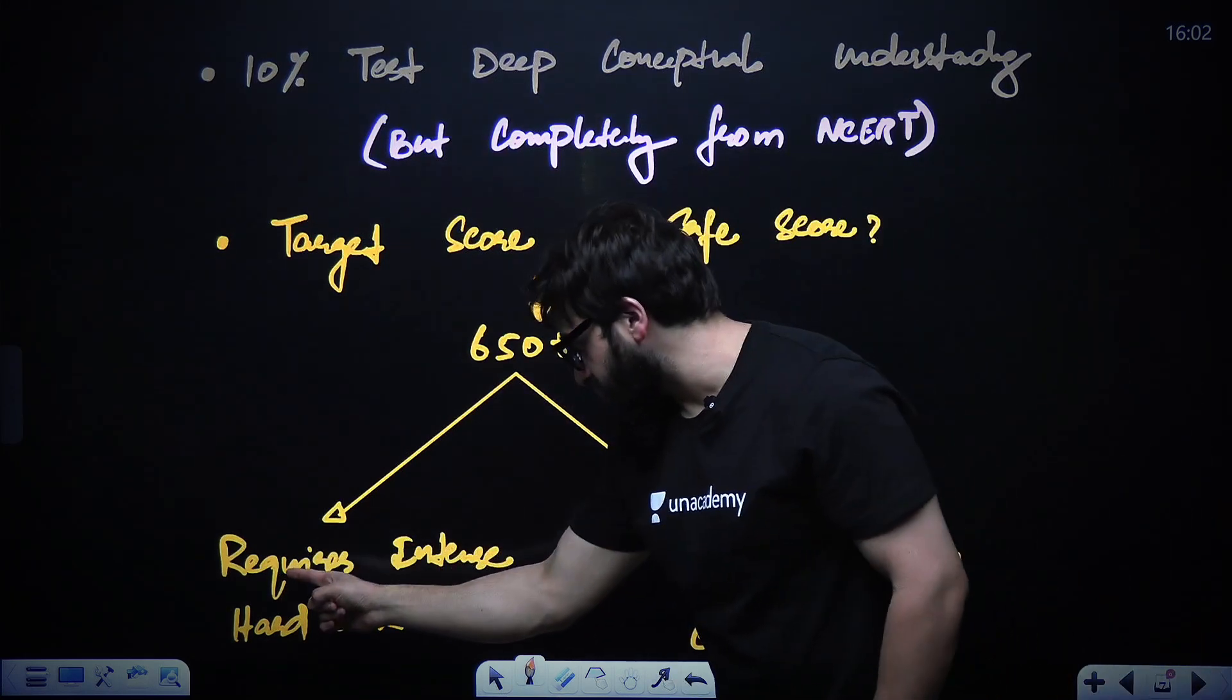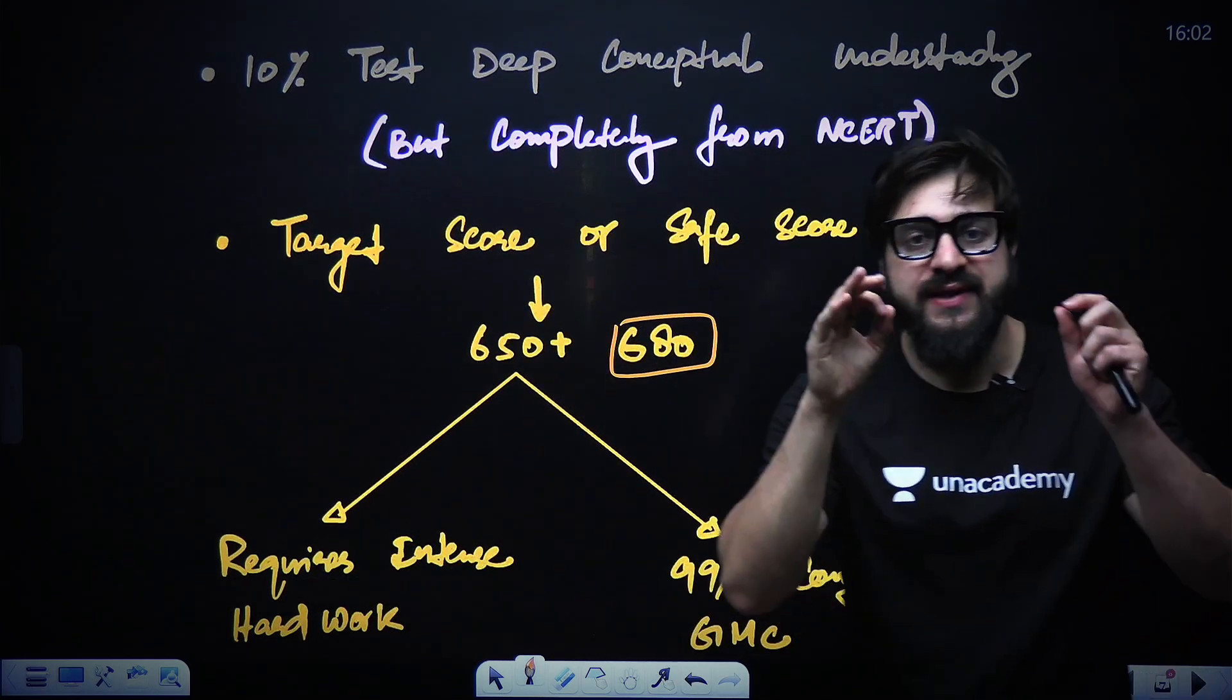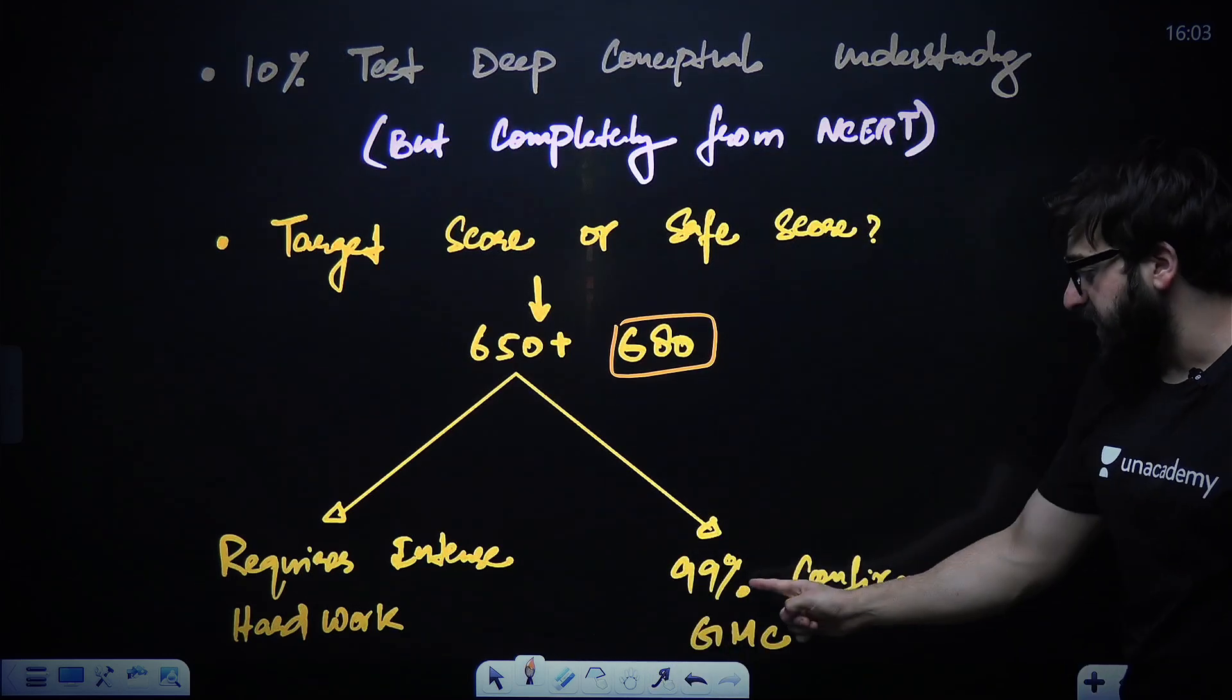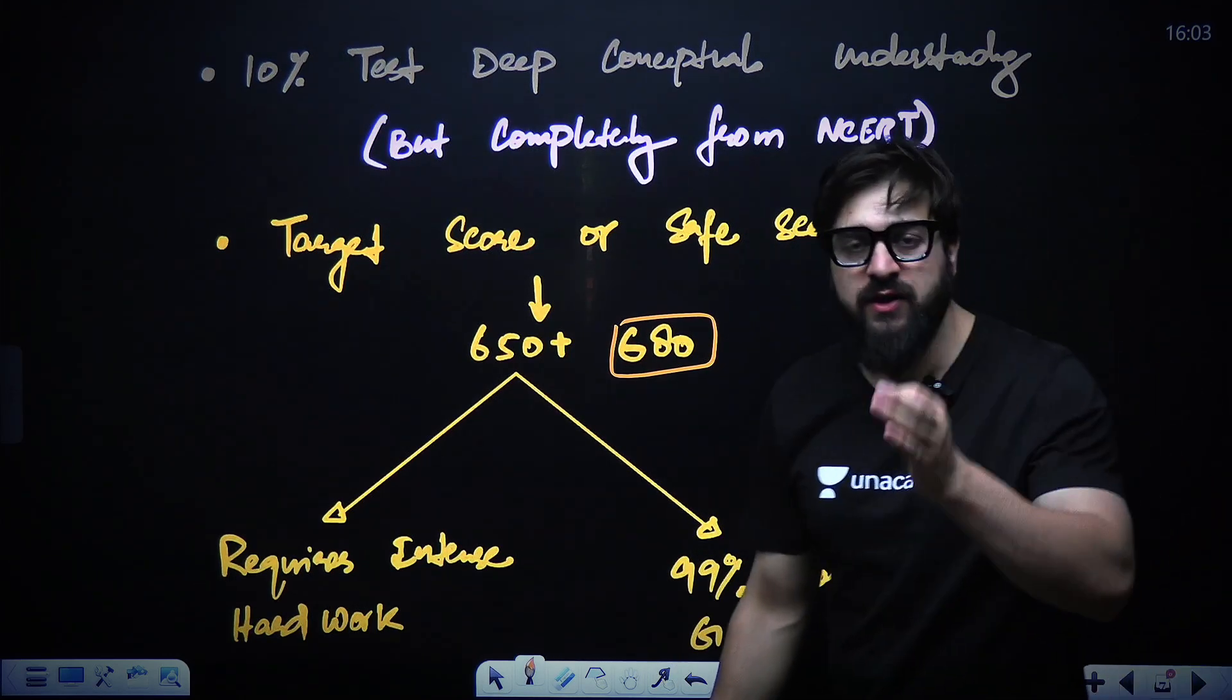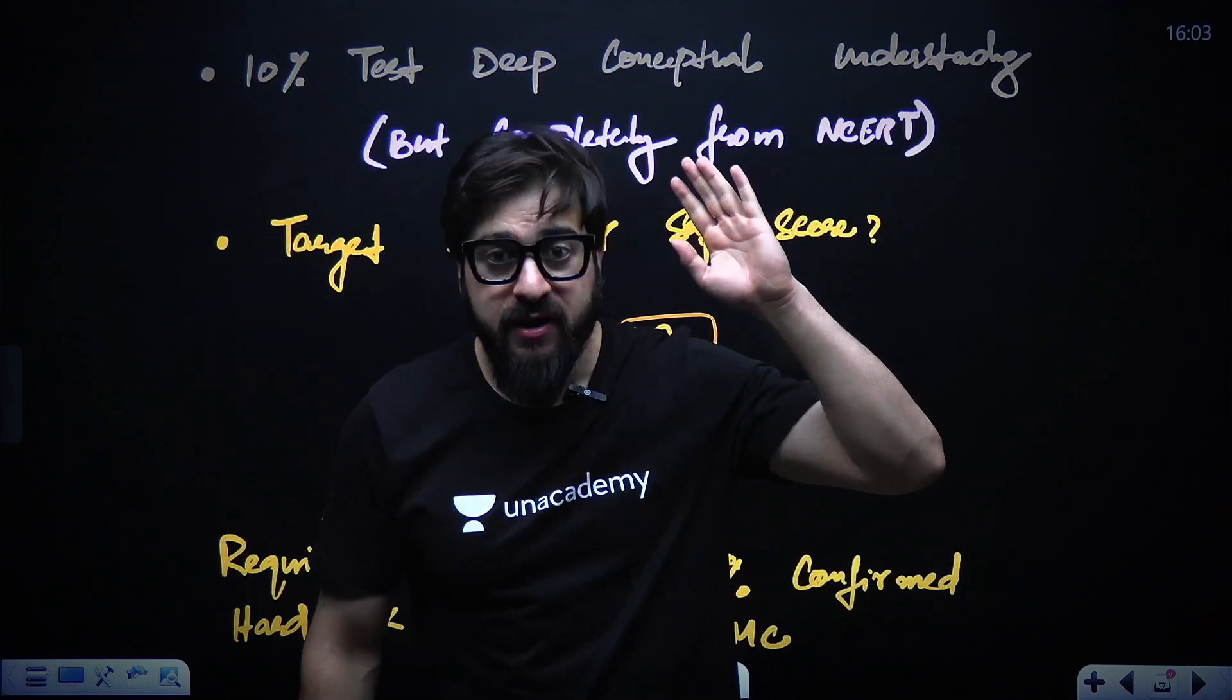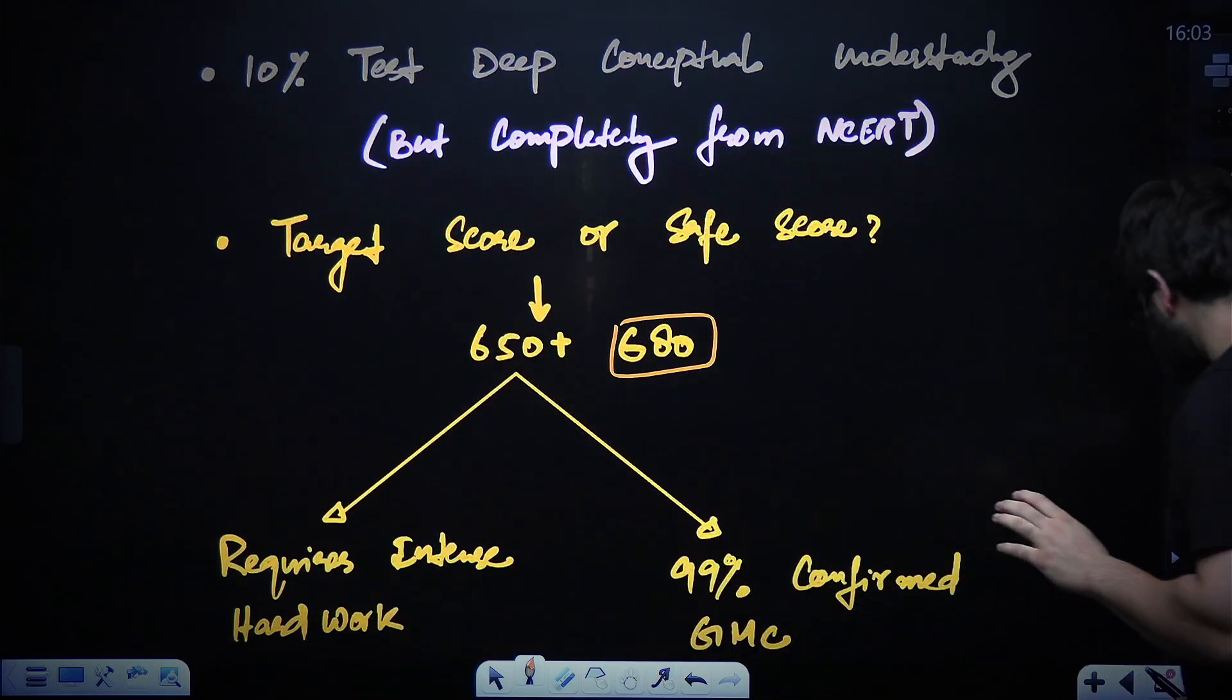Study accordingly if you keep the target score at 680. And then, my dear friends, it requires intense hard work and 99% chances are confirmed that you'll get the GMC if you do this at this particular score.